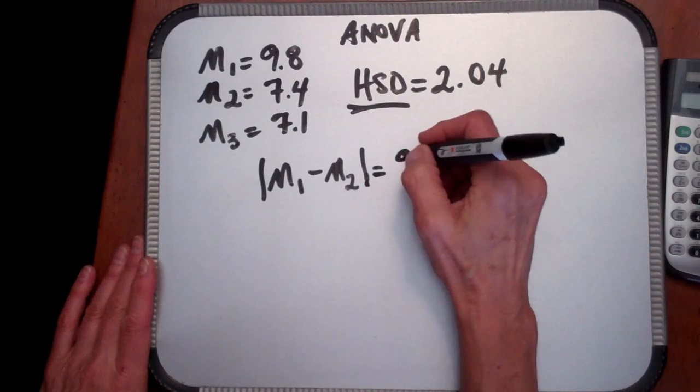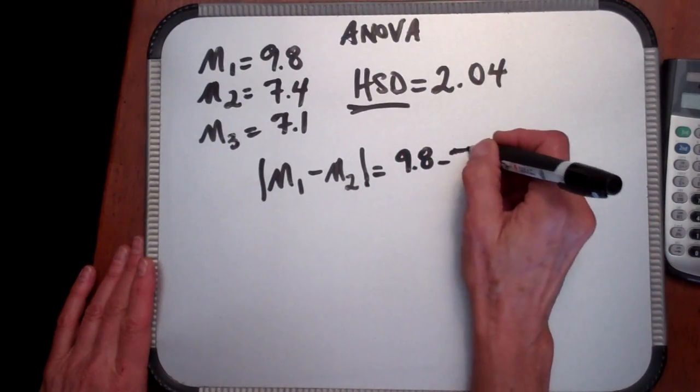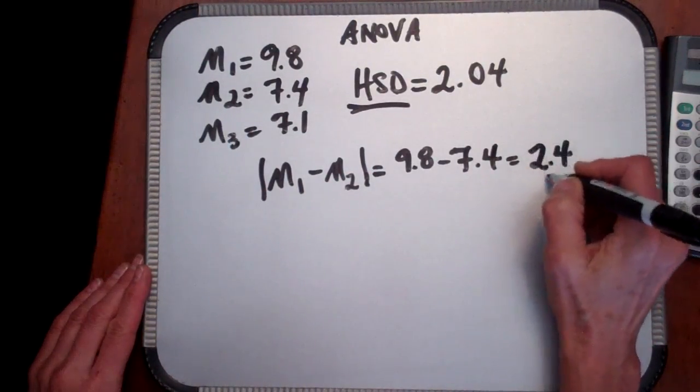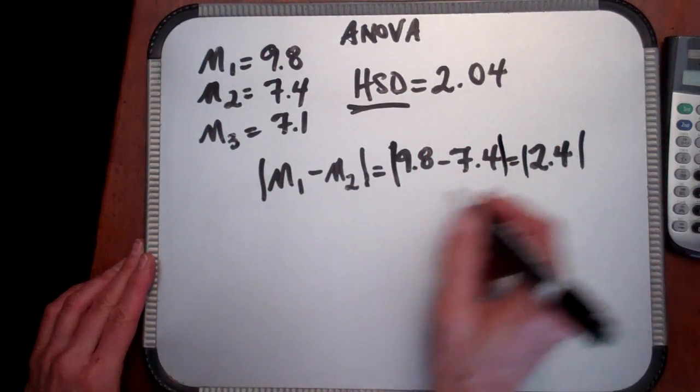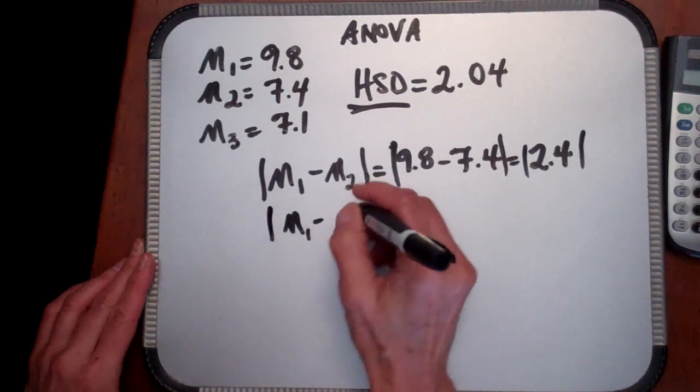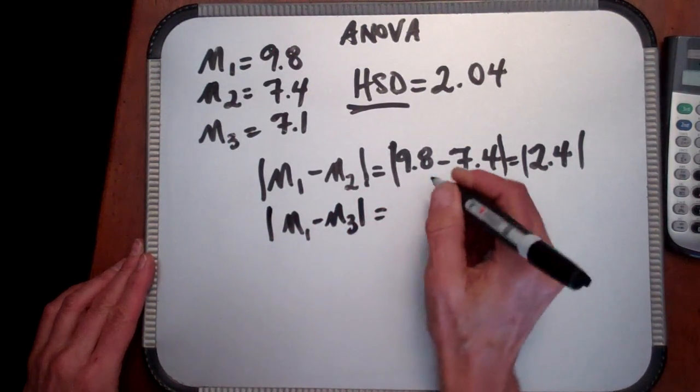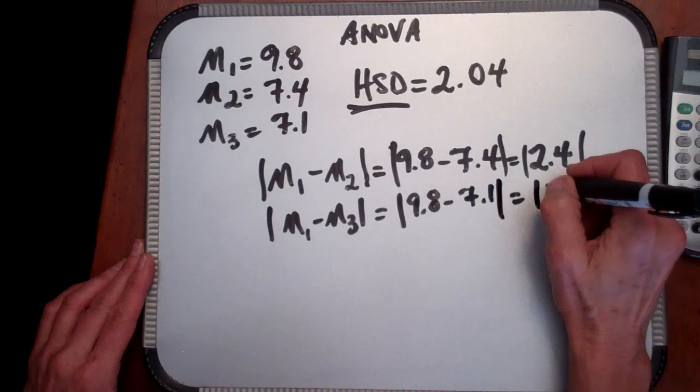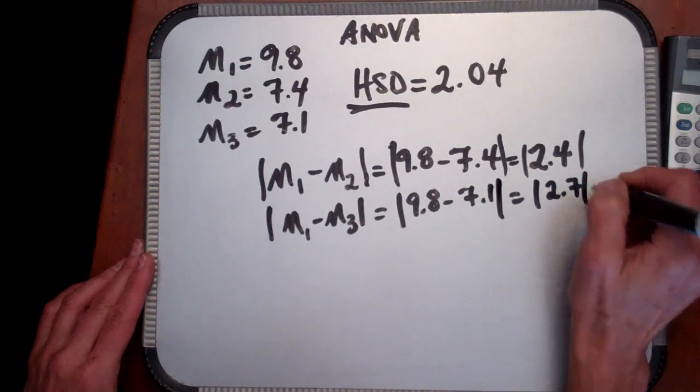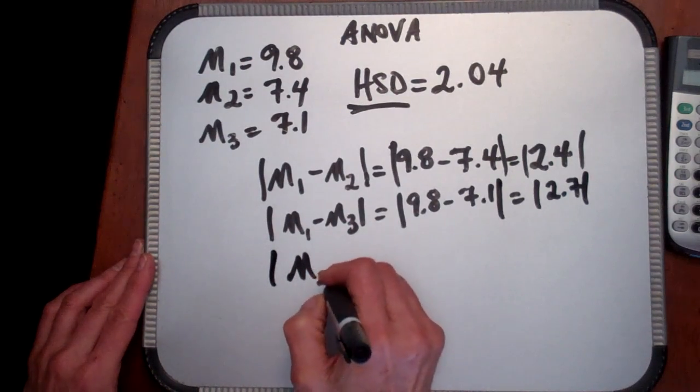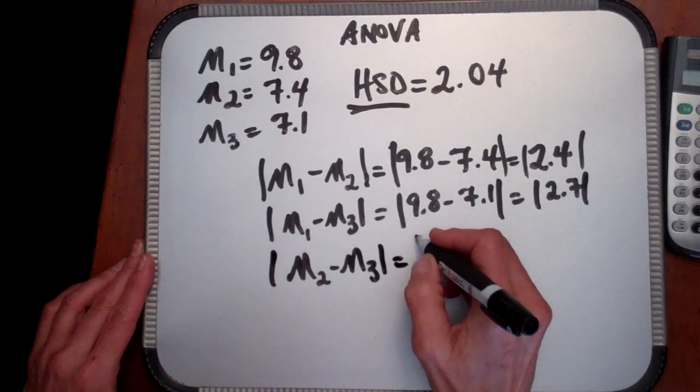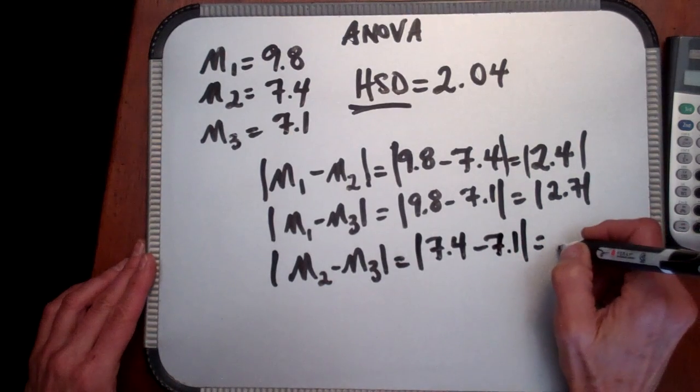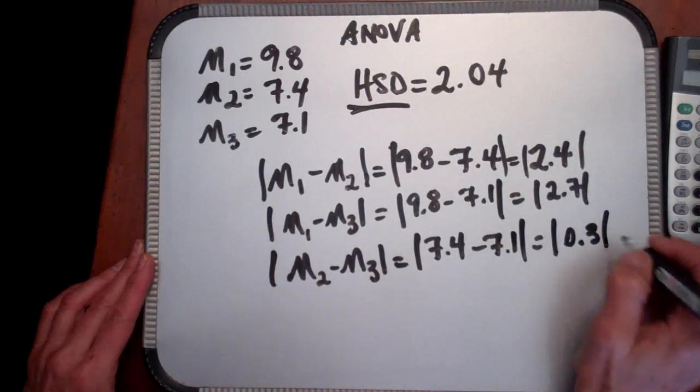So in this example, the mean of group 1 is 9.8 minus 7.4, and that value is 2.4. And then we're going to do the mean of group 1 minus the mean of group 3 equals 9.8 minus 7.1, and that's going to give us a value of 2.7. And then we're going to take the mean of group 2 minus the mean of group 3. Notice we're just doing all possible comparisons here. And this is 7.4 minus 7.1, and that of course is absolute value of 0.3.